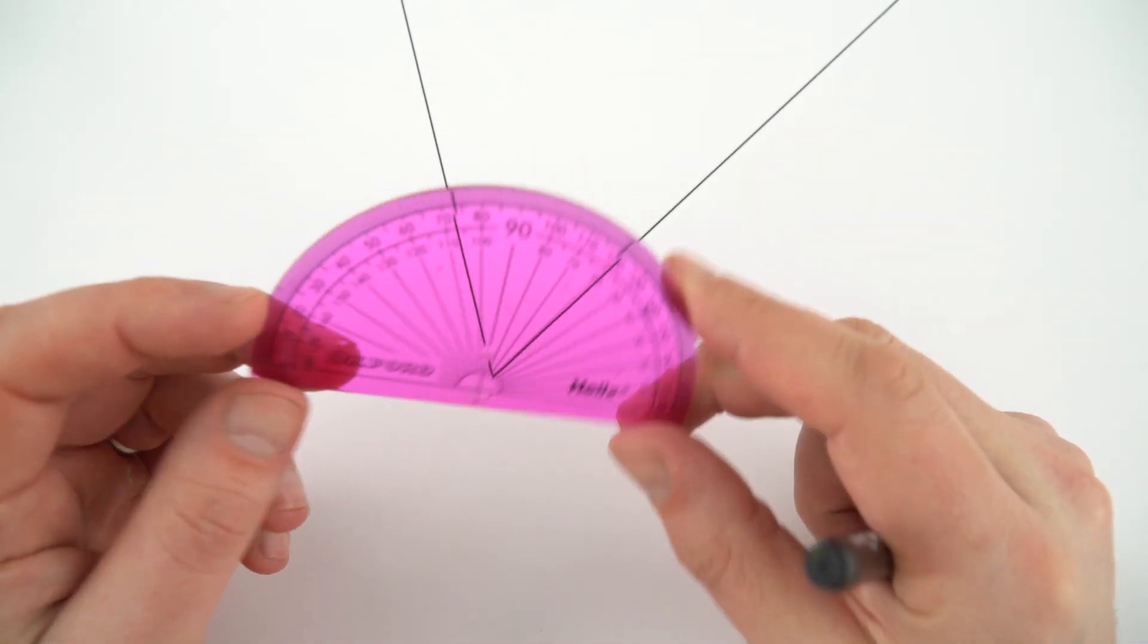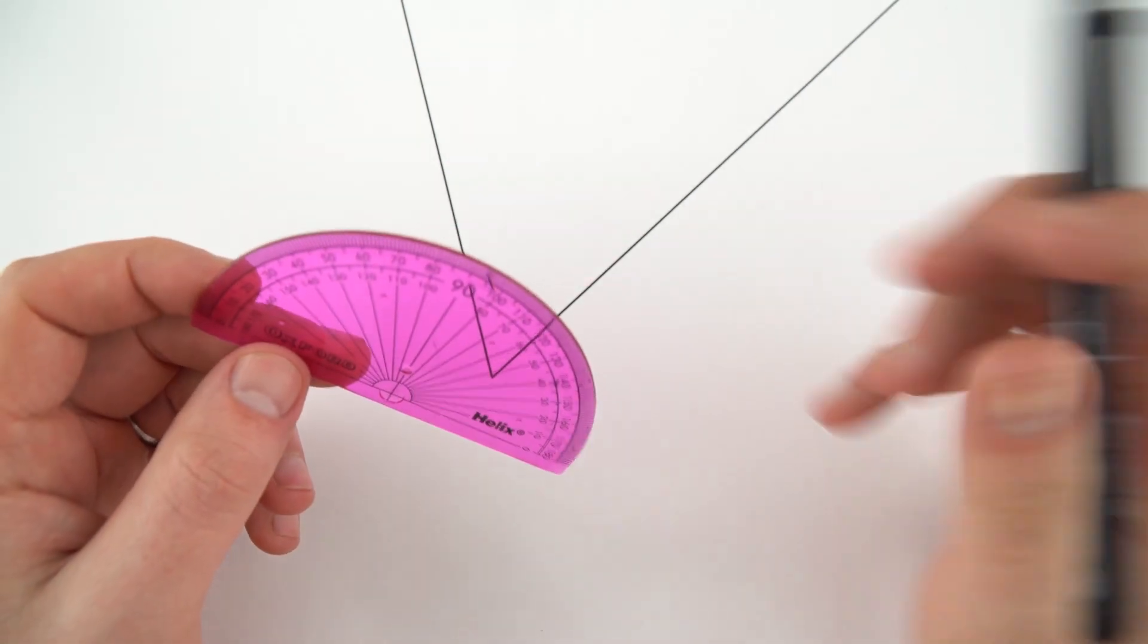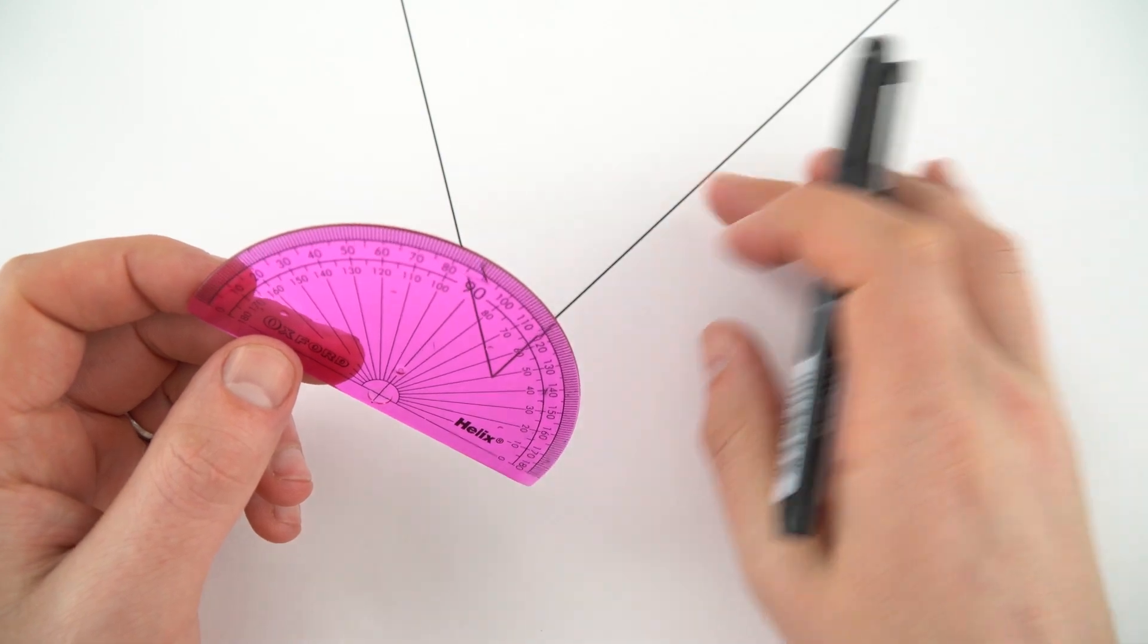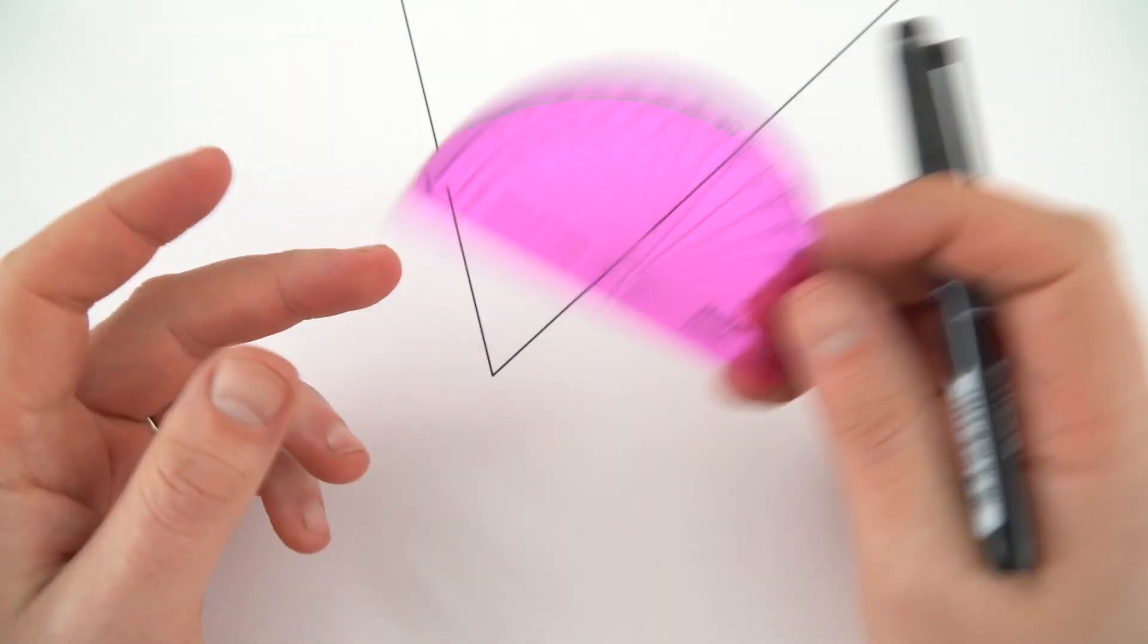So this is just a standard protractor and it's used for measuring angles. Really useful if you're doing scale drawing or perhaps you're measuring the angle of light in an experiment you've carried out.